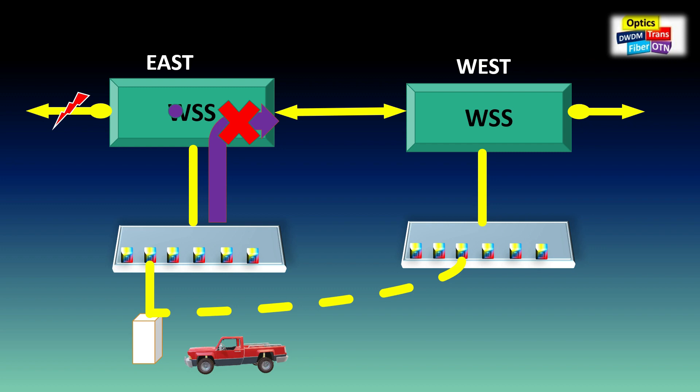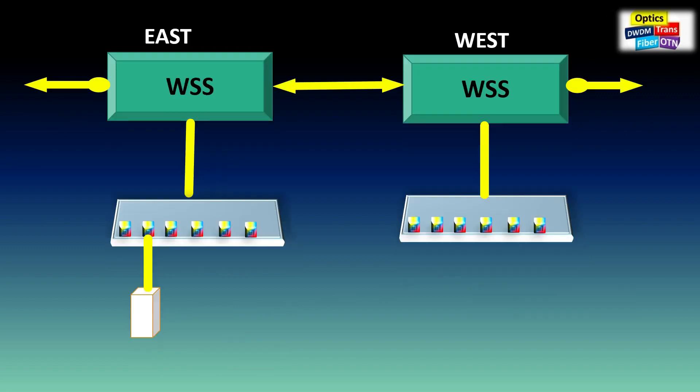This configuration is direction-dependent, called directional. To achieve network automation, we need directionless functionality. The same network can be upgraded to use directionless.